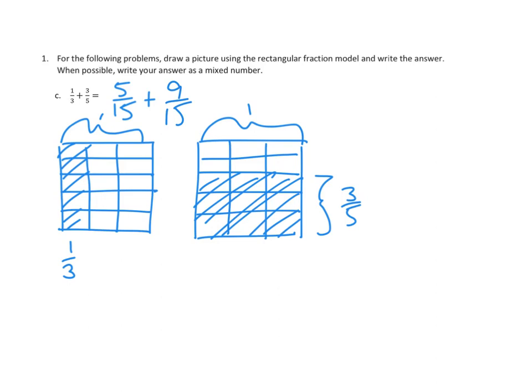Now, we can express 1/3 as fifteenths, so 1, 2, 3, 4, 5 of the 15 boxes are shaded. 5/15 is the same as 1/3. And over on this one, we've got 1, 2, 3, 4, 5, 6, 7, 8, 9 fifteenths are shaded here as well.